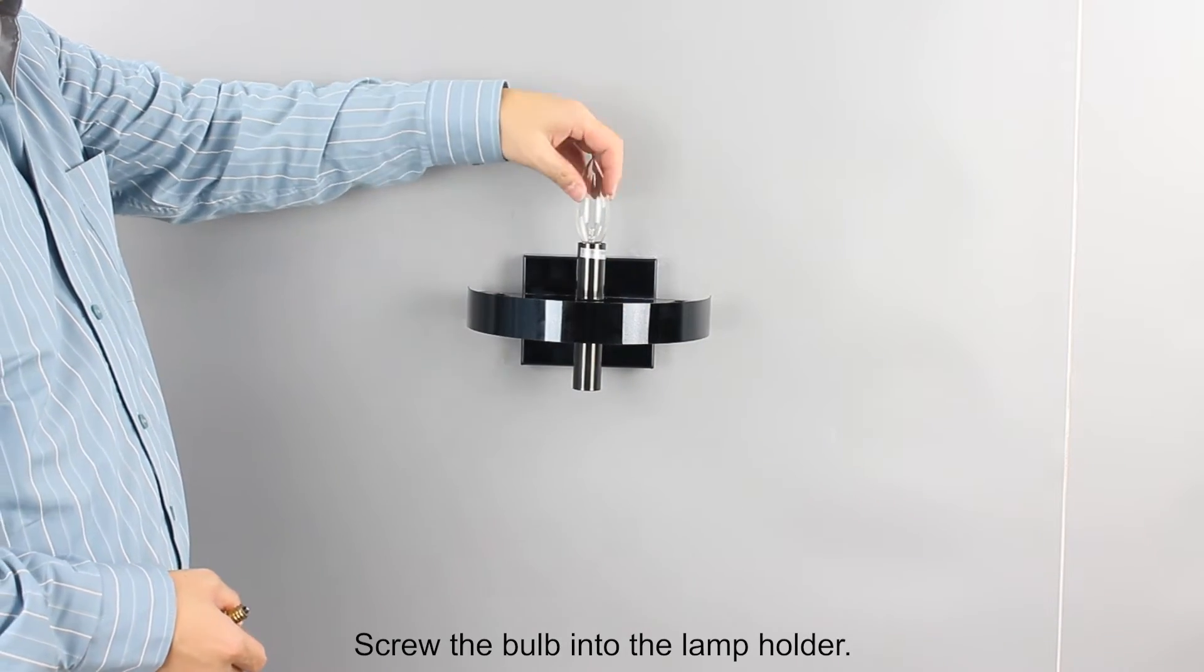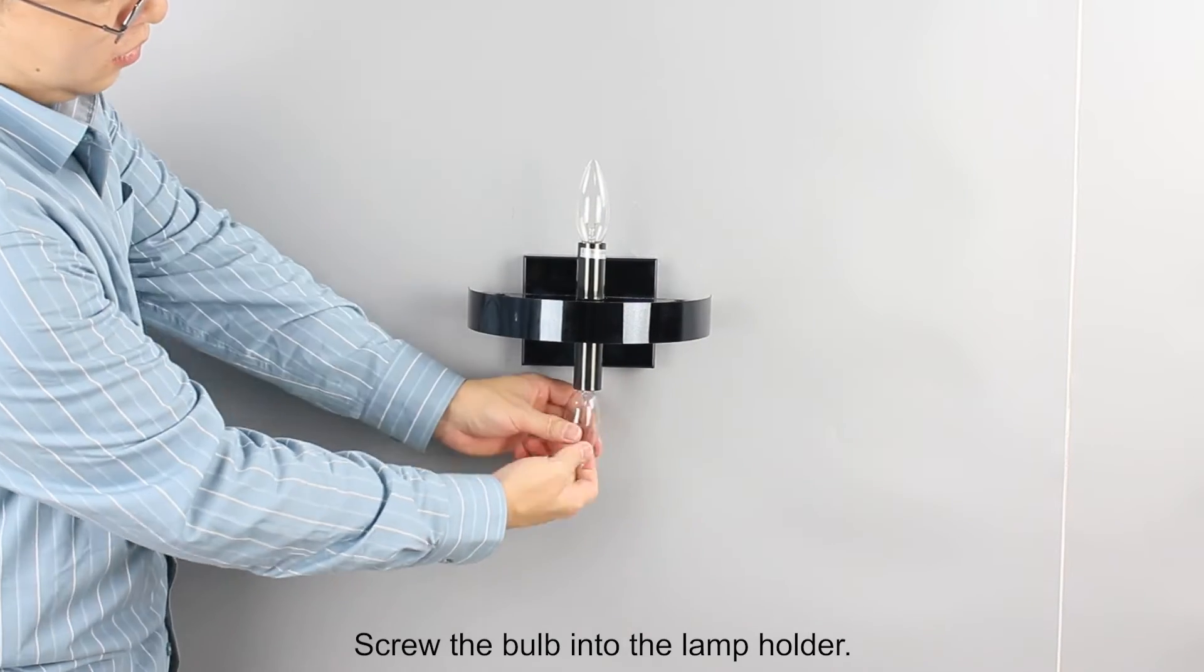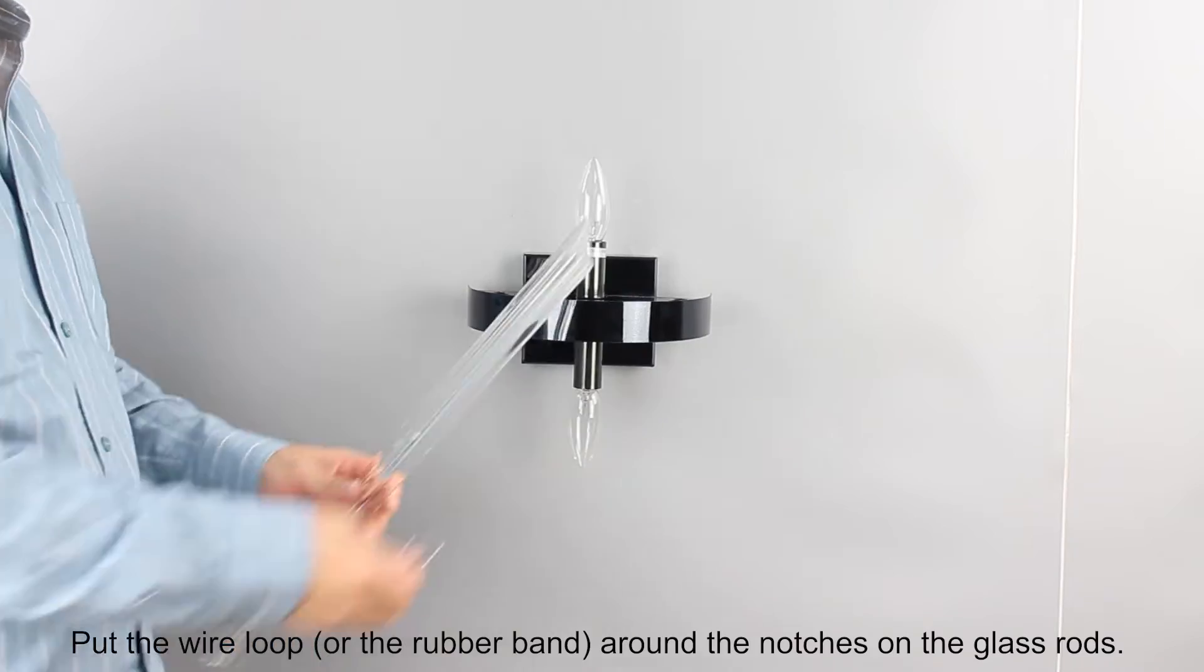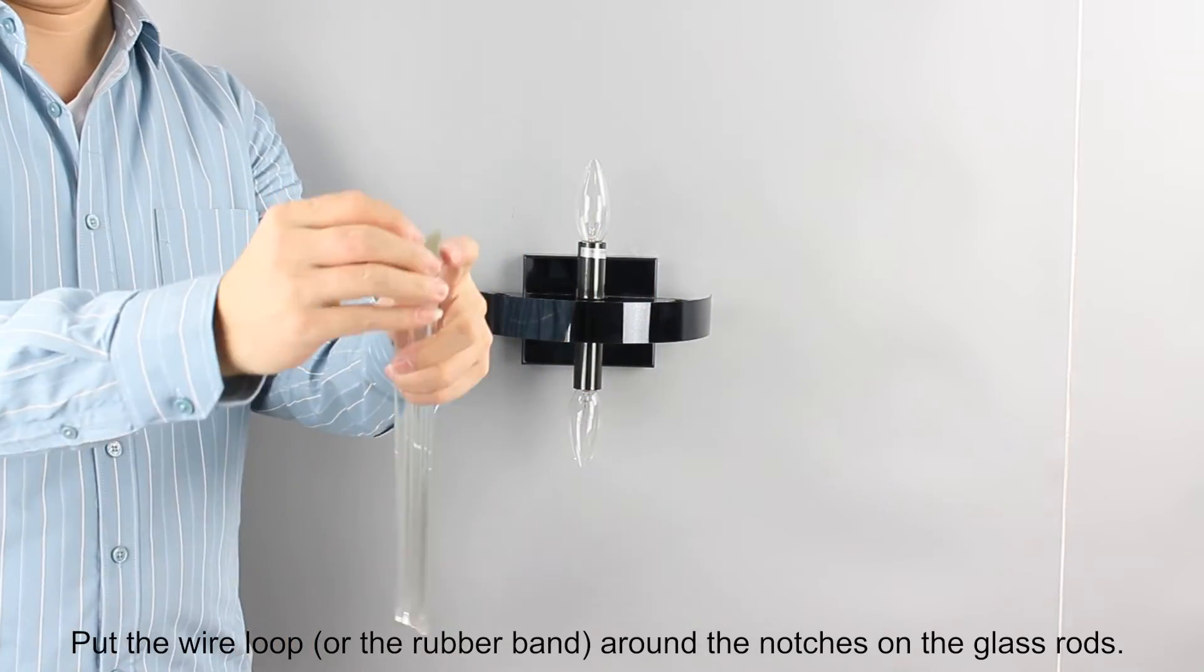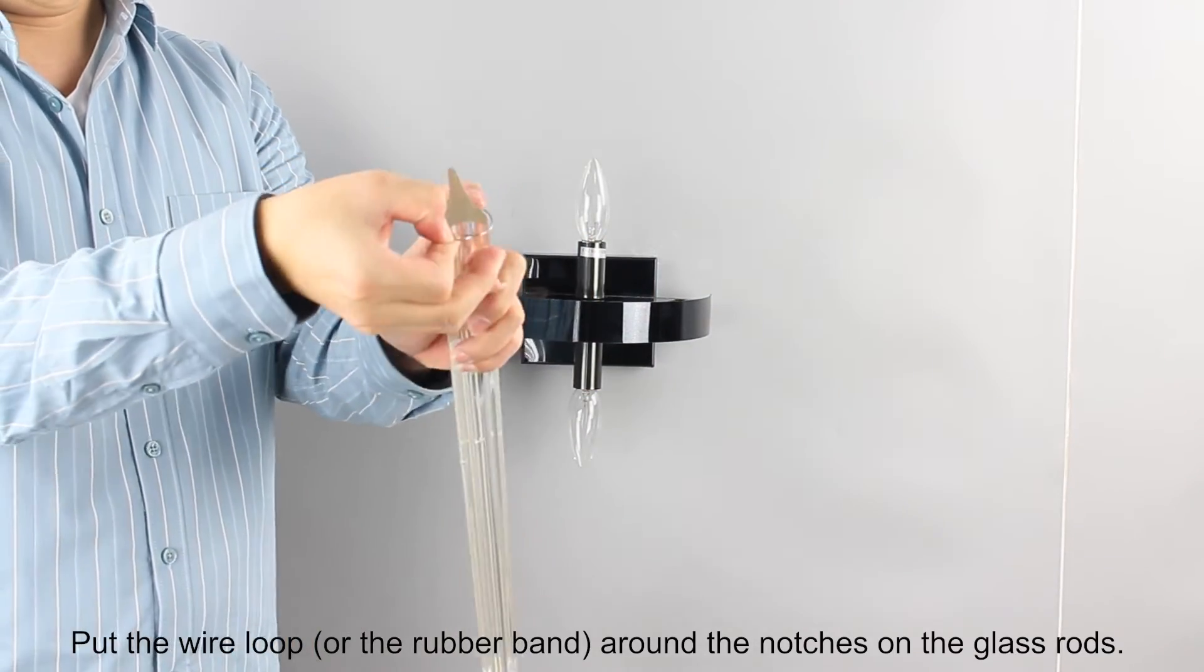Screw the bulb into the lamp holder. Put the wire loop around the notches on the glass rods.